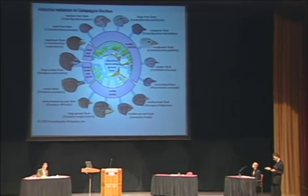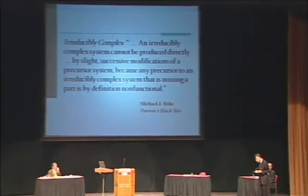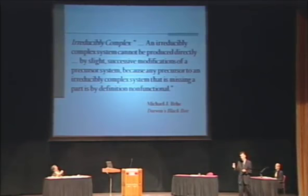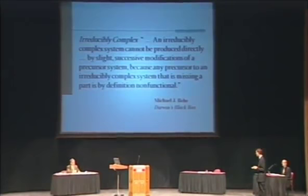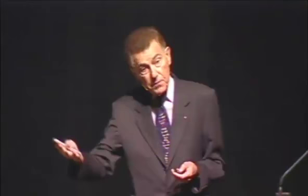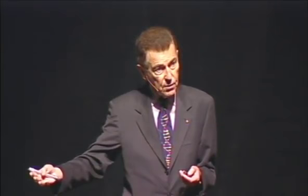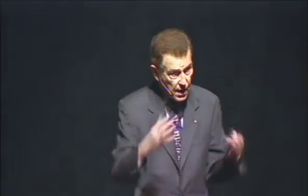Now let me use the last minute I have to consider the argument of irreducible complexity, presented for example by Behe. Unless you have all the parts of the eye, or all the parts of the bacterial flagellum, or all the parts of the blood clotting system, it doesn't function. So he says natural selection cannot work because you would need all the parts at the same time. Well, for all the examples he gave in his book, it has been shown in detail how the evolution occurred. I'm going to show you this with respect to the eye.